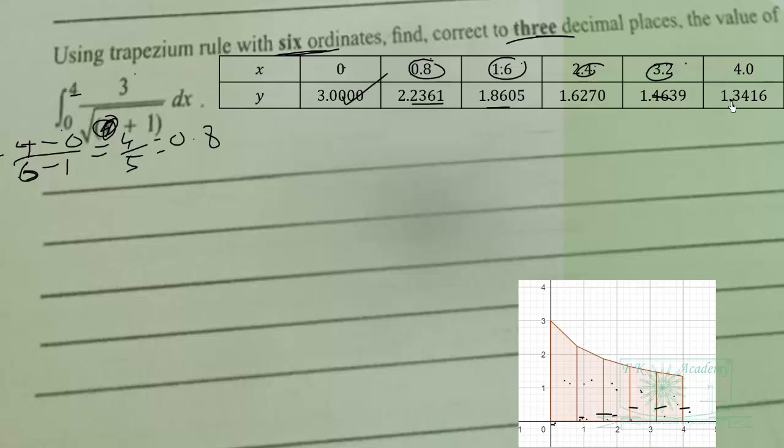We recall the trapezium rule. The formula is given by h/2 times [y₀ + yₙ + 2(y₁ + y₂ + y₃ + ... + yₙ₋₁)]. That means add the first and the last ordinates, then multiply the remaining ones by 2.